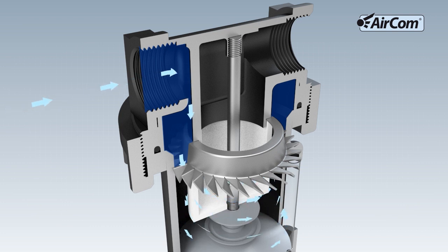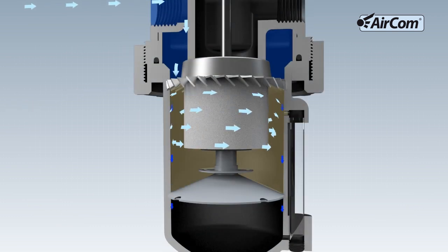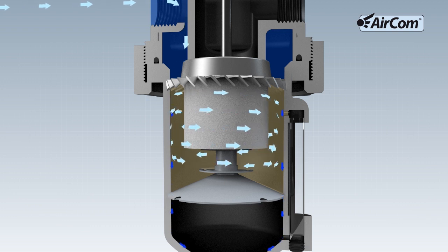flings water particles in the air against the filter wall. These water particles then run off the container wall to the container's base.